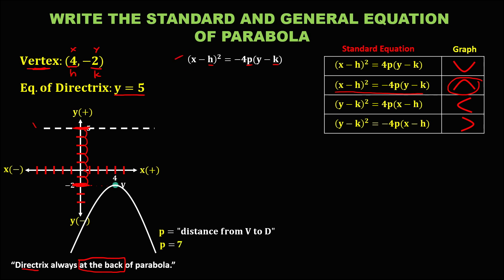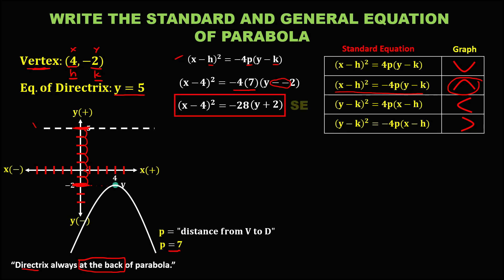To write the standard equation: (x minus h), where h is positive 4, squared equals negative 4 times p, where p is 7, times (y minus k), where k is negative 2. Simplifying: negative 4 times 7 is negative 28, and the double negative becomes positive. This is now the standard equation for this parabola.